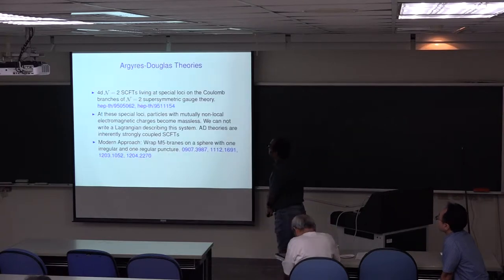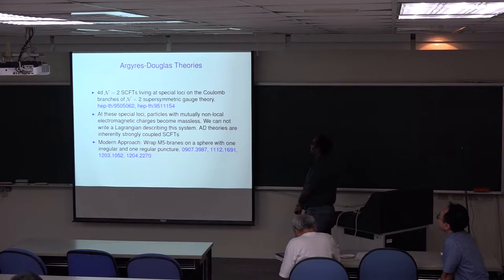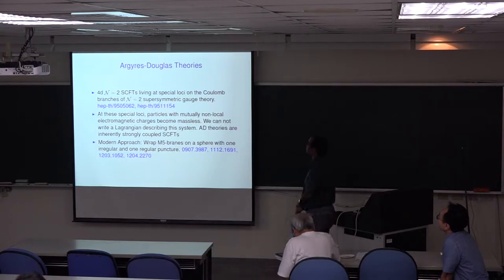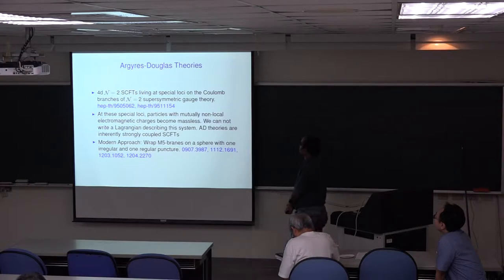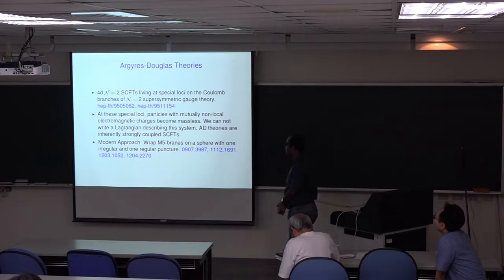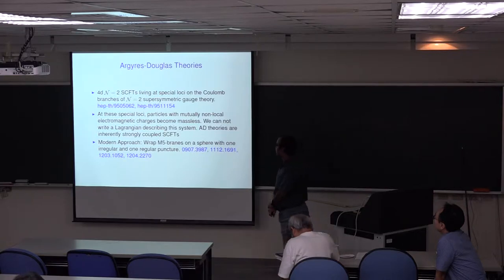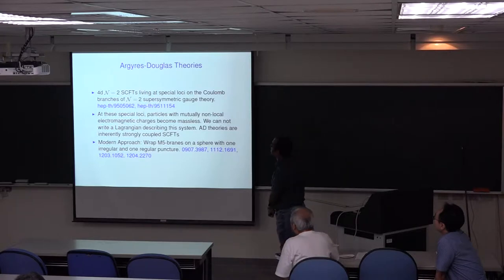Argyres-Douglas theories are 4d N equals 2 SCFTs living at special loci on the Coulomb branch of N equals 2 superconformal gauge theories. At the special loci, particles with mutually non-local electromagnetic charges become massless. This implies that we cannot write a Lagrangian describing the system, which also implies that Argyres-Douglas theories must be inherently strongly coupled SCFTs.